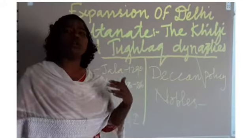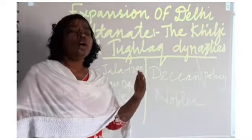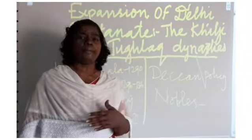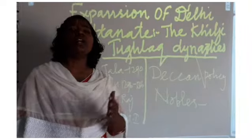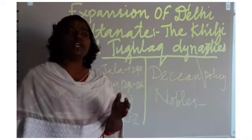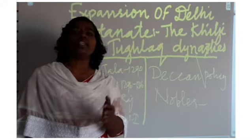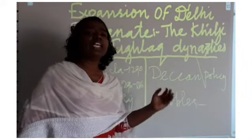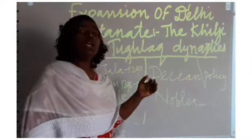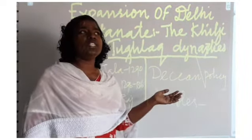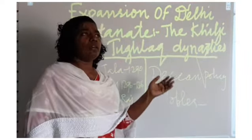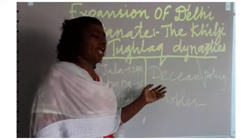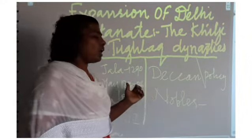His main motive was to increase the standing army. To maintain a standing army he needed a lot of money. As part of the revenue system, he measured the land, and based on the measurement of land the tax was collected. There was a fixed tax for everything. He increased the tax from the people and strictly collected a particular income from the people based on land.